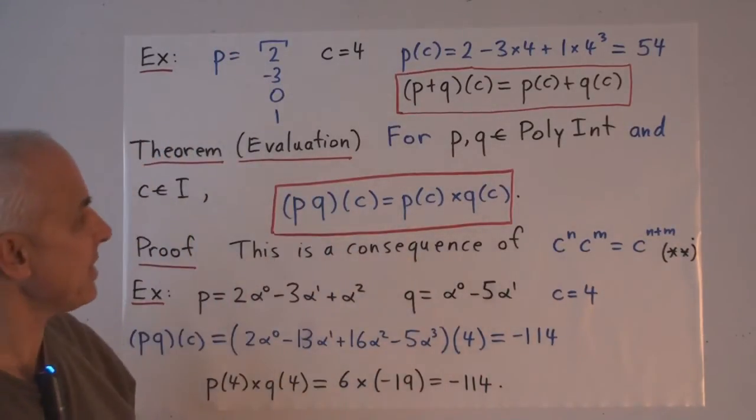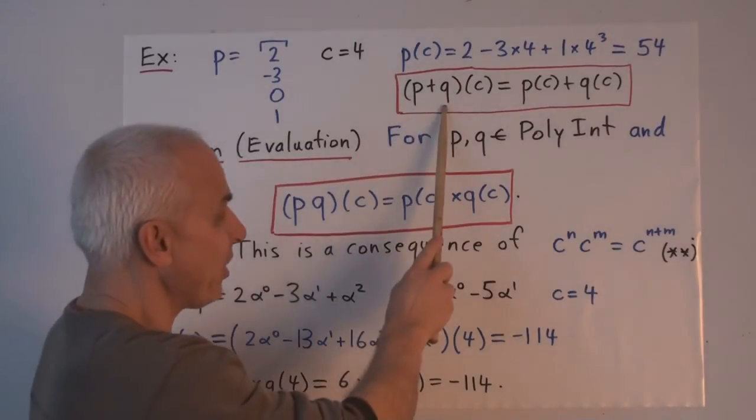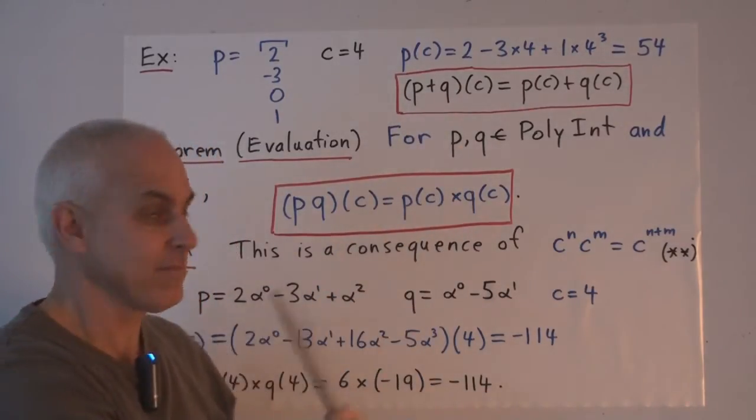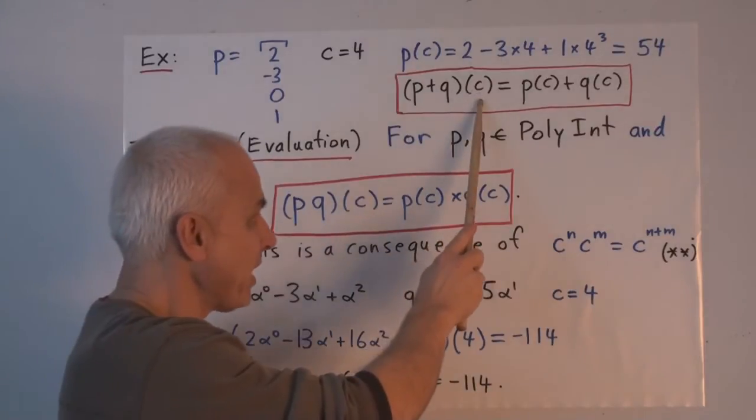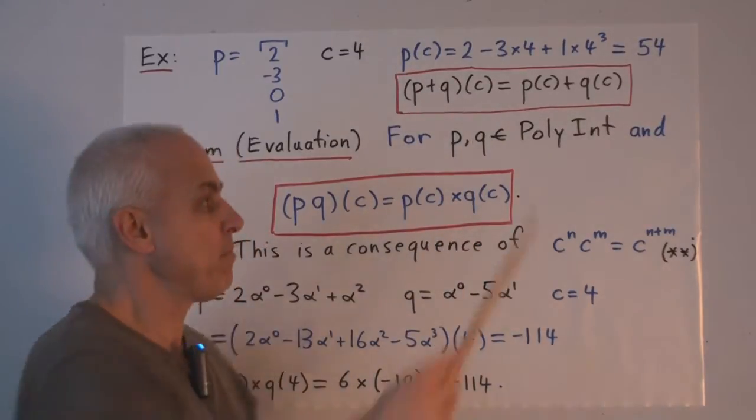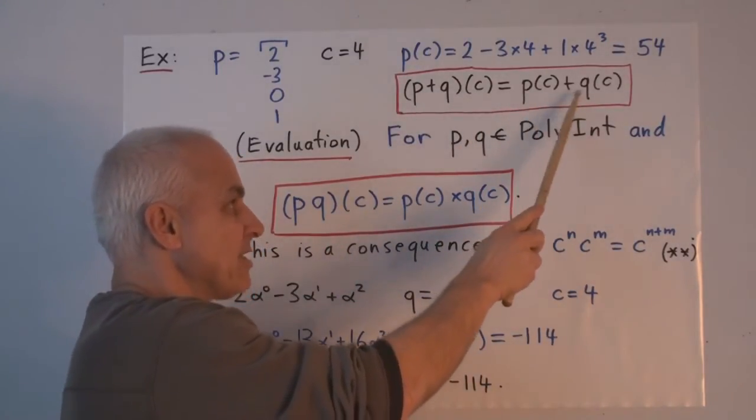All right, there's one very easy property of this evaluation, that if you take two poly numbers and evaluate at C, P plus Q evaluated at C, that's P of C plus Q of C.